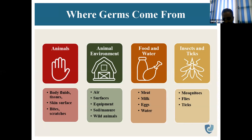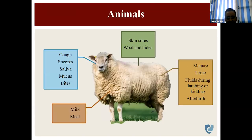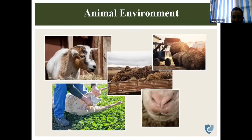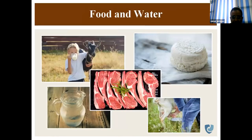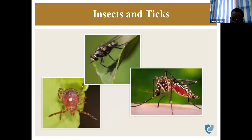Vectors carry diseases from animals. While sucking blood or feeding on animals, they carry zoonotic pathogens and then transmit them to humans. From animals, germs can come from skin sores, wool and hides, urine, fluids, birth products, milk, meat, cough, sneeze, saliva, mucus, and bites. The animal environment can harbor zoonotic pathogens. From food and water, and from insect and tick vectors, we can also get zoonotic pathogens.